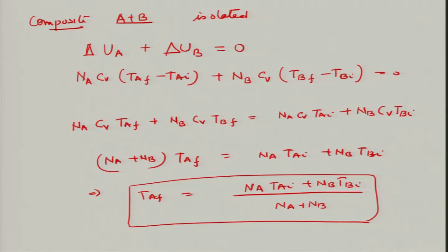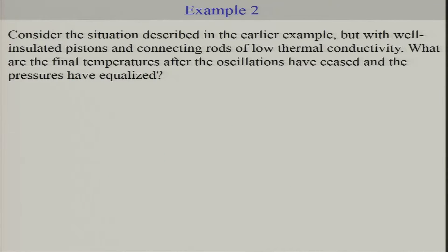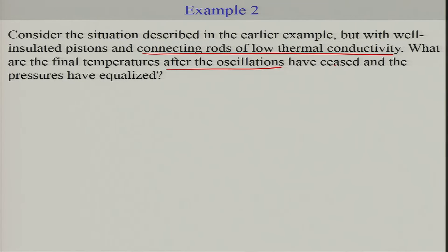Now consider the situation from the earlier example, but with a well-insulated piston and connecting rods of low thermal conductivity, which means heat will not get transferred from one region to another. Our assumption of temperature equality cannot be imposed here. Since the process is fast and heat transfer through the rod can be neglected, the final temperatures in the two compartments are going to be different. What are the final temperatures after oscillations have ceased and pressures have equalized?